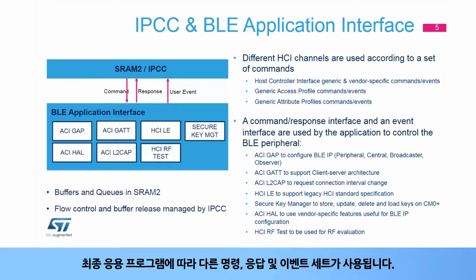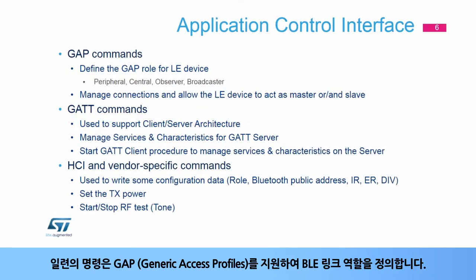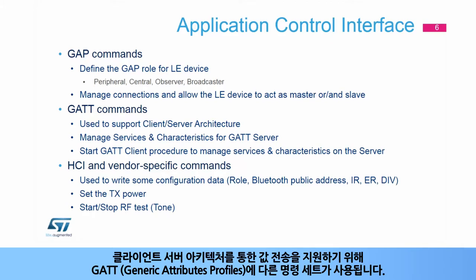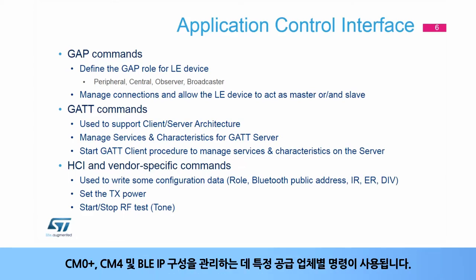Different sets of commands, responses, and events are used depending on the final application. A set of commands supports Generic Access Profiles, or GAP, to define the BLE link role. Another set of commands is used for the Generic Attributes Profiles, or GATT, to support the transfer of values via the client-server architecture. Certain vendor-specific commands are used to manage CM0+, CM4, and BLE-IP configurations.